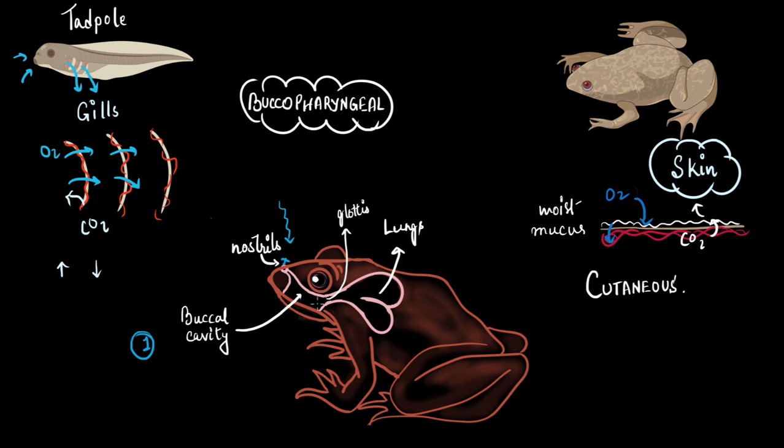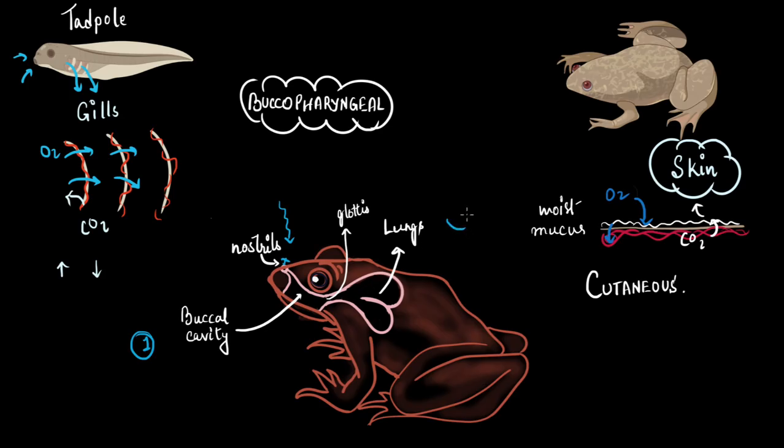The glottis opens, the air rushes into the lungs. Now, the lungs have alveoli which increases the surface area for absorption of oxygen. But the lungs are not as well developed as in case of humans. And they also have fewer alveoli than we humans possess. And as you may already know, these alveoli are highly vascularized. They are very thin-walled and oxygen and carbon dioxide can easily exchange through the walls of this alveoli and blood capillaries.